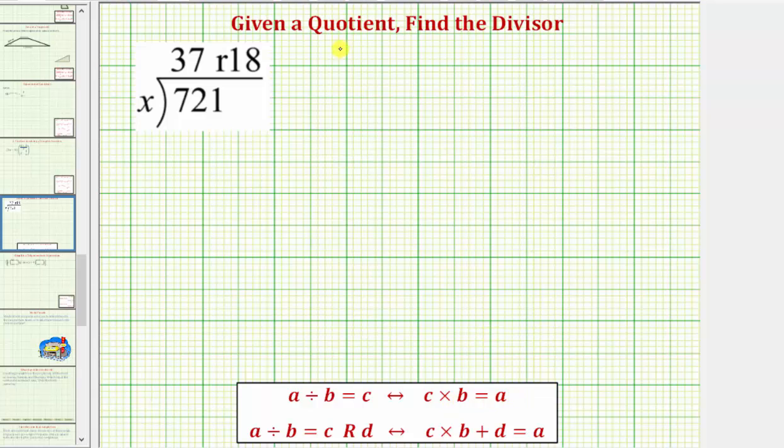An example of this would be 15 divided by three equals five, because five times three equals 15. Notice how this also tells us that 15 divided by five equals three, since three times five equals 15.